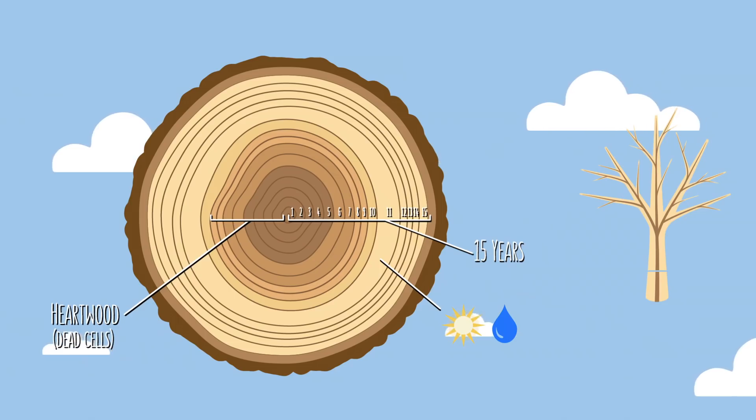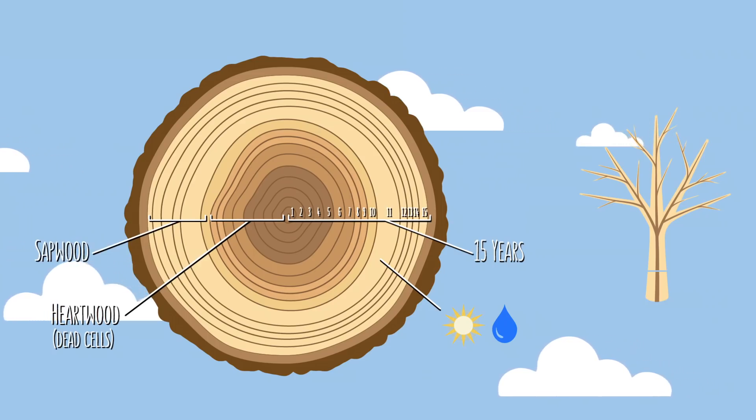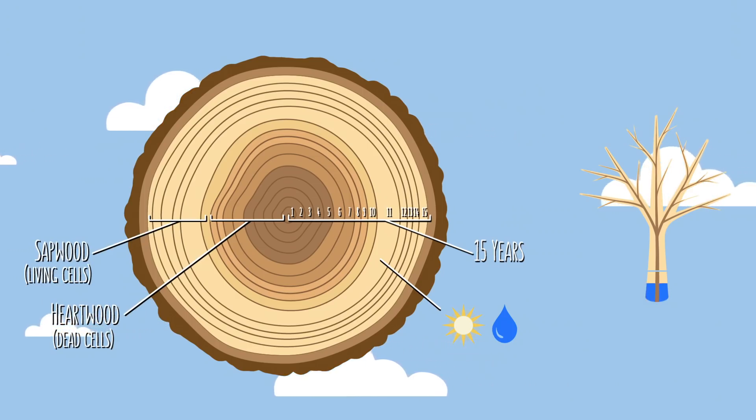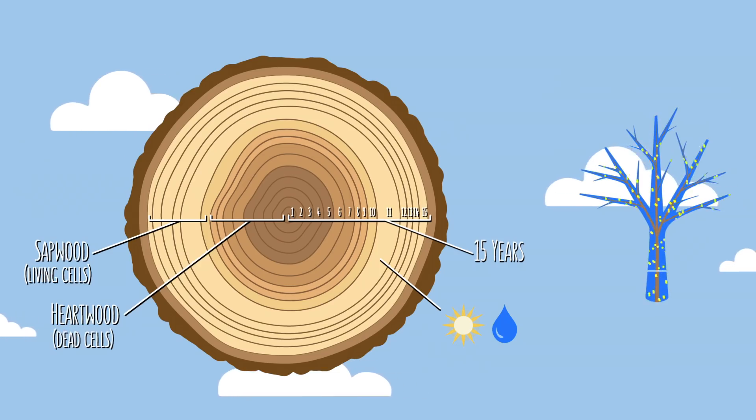And then on the outside of the heartwood, you'll also notice lighter colored rings, which are typically referred to as the sapwood. These are the cells that are still alive. And as the name suggests, they're responsible for the transport of water and stored sap up the tree. Think of them almost like the tree's veins and arteries.